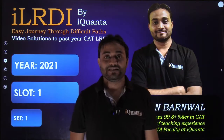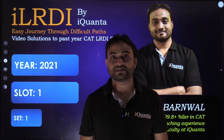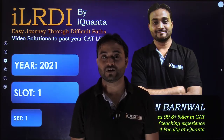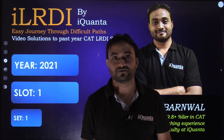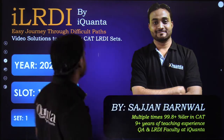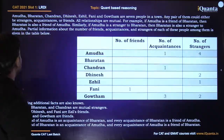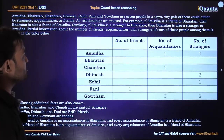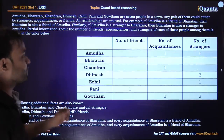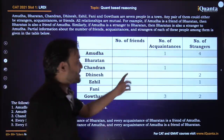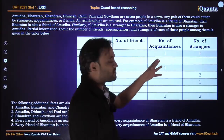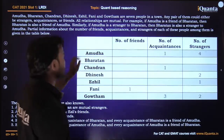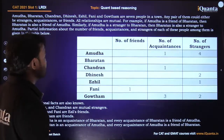Hello guys, let's discuss this amazing set from CAD 2021 slot 1. This set is about distribution of number of friends, number of acquaintances and number of strangers of a particular person.